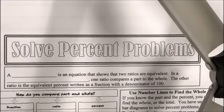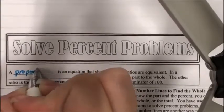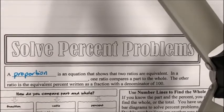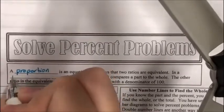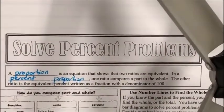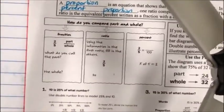This is Chapter 2, Lesson 8: Solve Percent Problems. A proportion is an equation that shows that two ratios are equivalent. In a percent proportion, one ratio compares a part to the whole, and the other ratio is the equivalent percent written as a fraction with a denominator of 100.